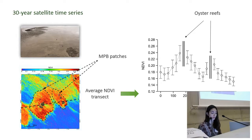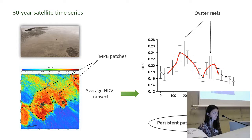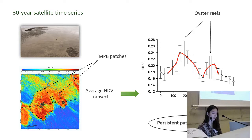The resulting mean transect shows that recurrent, highly concentrated MPB patches are present around the oyster reefs. So from this stage, we already knew that oysters actually seem to have a positive effect on MPB.